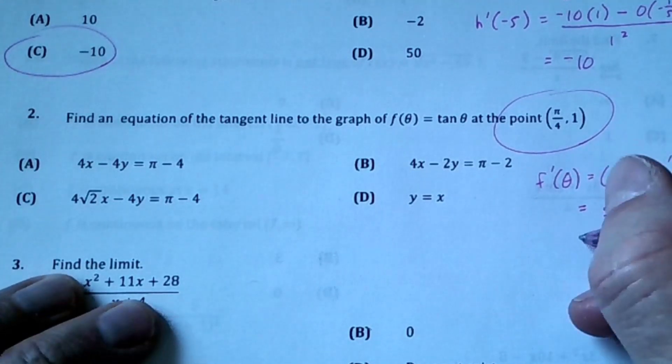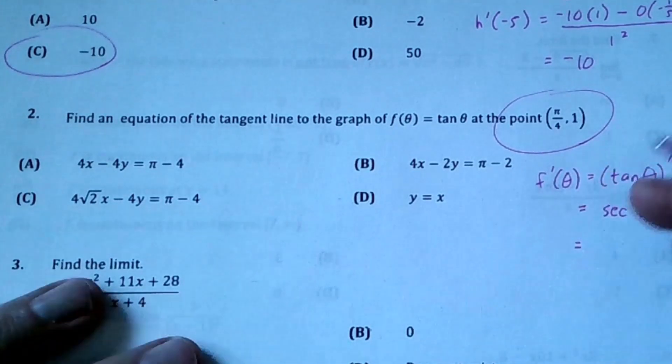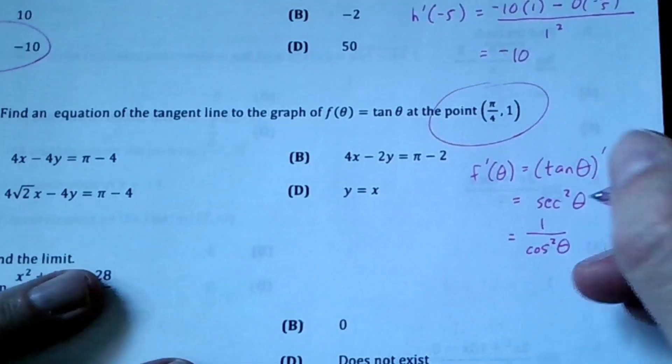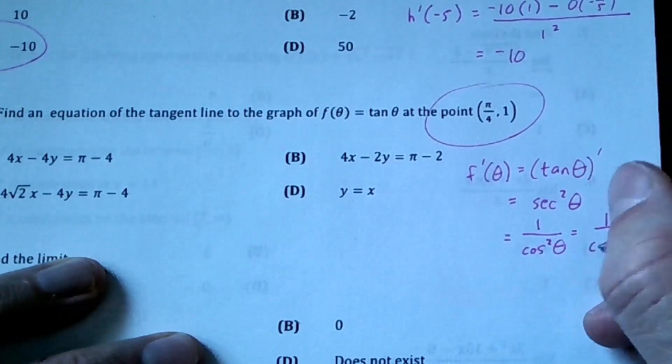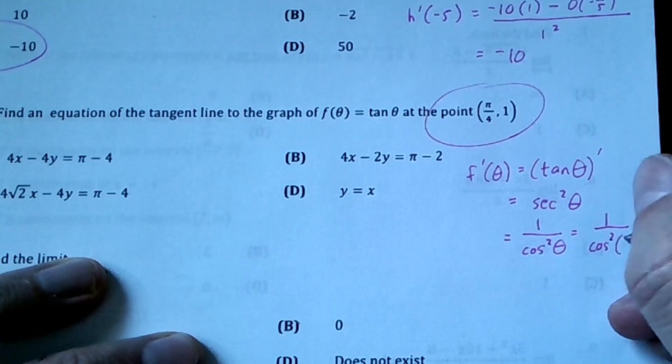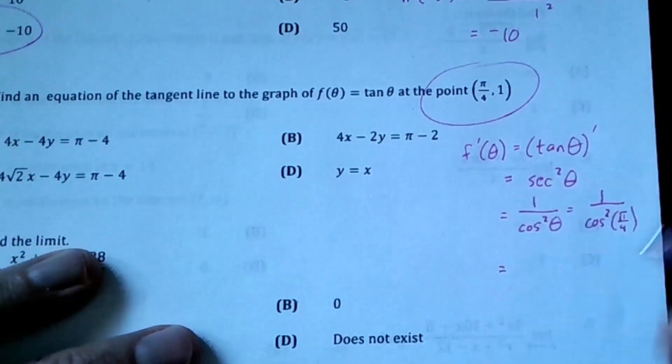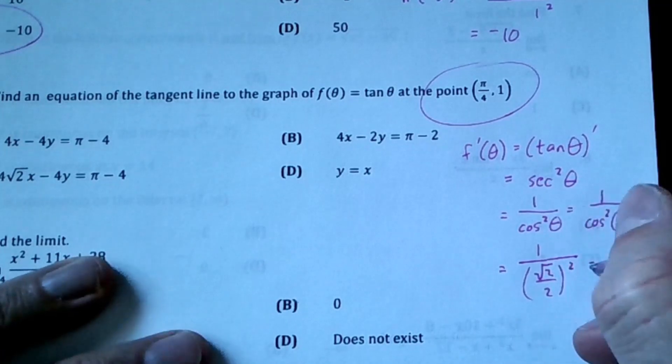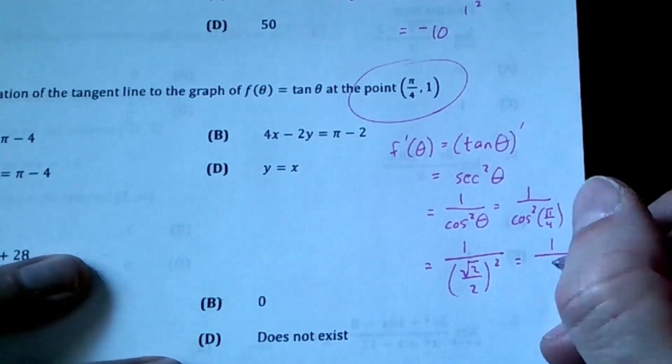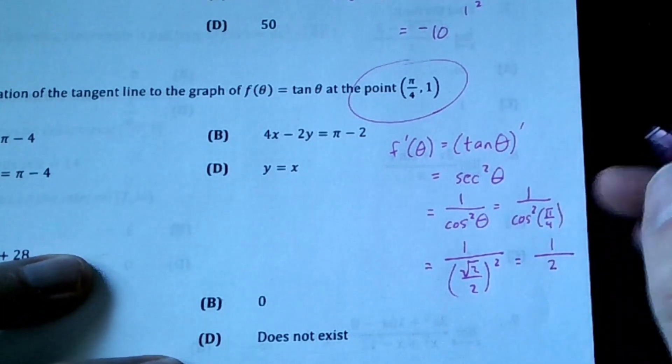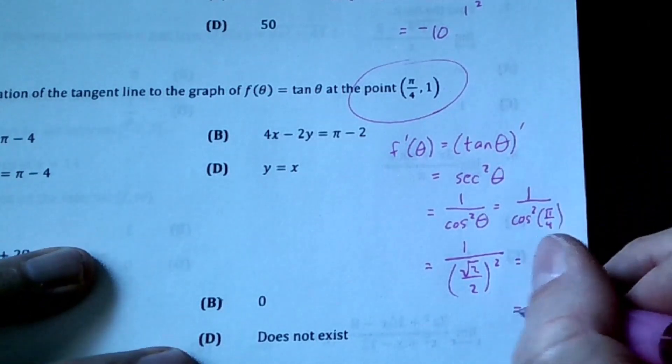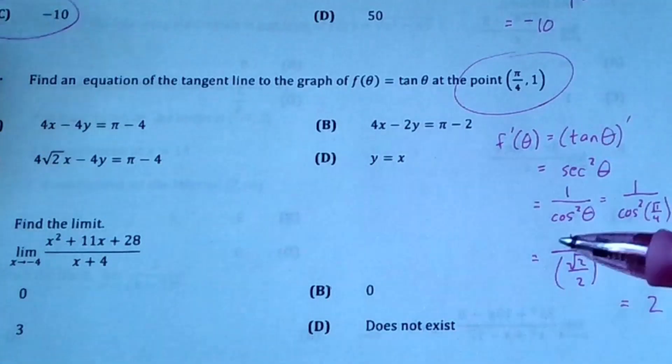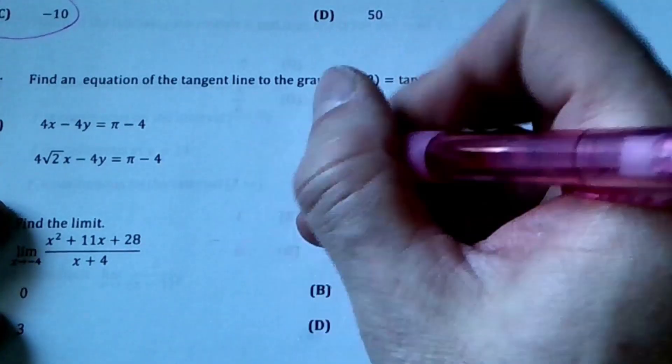I'm going to do this by hand. Secant is 1 over cosine, so secant squared of π/4 is 1 over cosine squared of π/4. Cosine of π/4 is √2/2, and I have to square that, giving me 1 over 1/2, which equals 2. So the slope is 2.